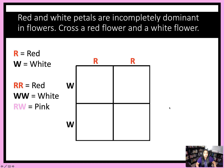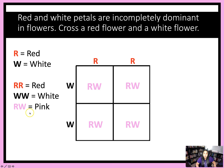So let's go ahead and set up our square. We've put our red parent up here and our white parent over here, and then we will go ahead and cross just like we usually do. And if you look, each square ends up with one capital R and one capital W. And when you have one of each of these letters, we know from our initial key that that equals pink.